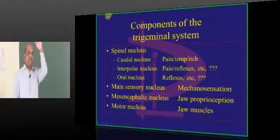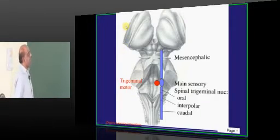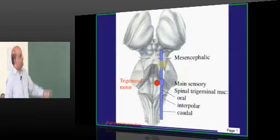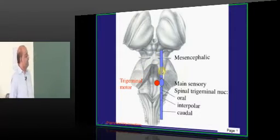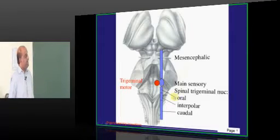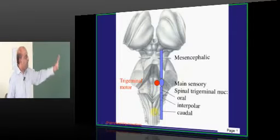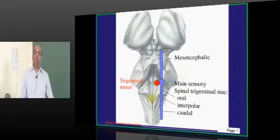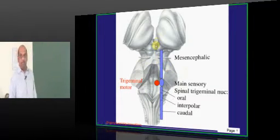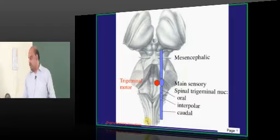One nucleus is in the midbrain, the others extend all the way from the midbrain into the pons, into the spinal cord and medulla. The mesencephalic nucleus is in the midbrain. The main sensory and spinal trigeminal nucleus extends through the pons — with an oral part, interpolar part, and caudal part. The trigeminal motor nucleus and main sensory nucleus are both located in the pons. The mesencephalic extends from pons into the midbrain, and the spinal trigeminal extends all the way from the pons into the medulla.